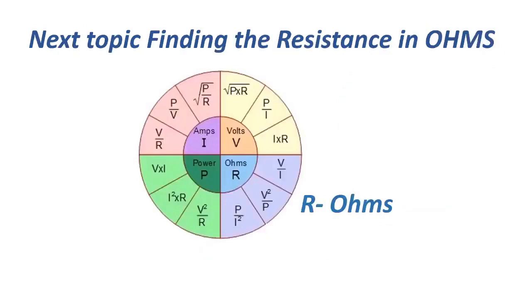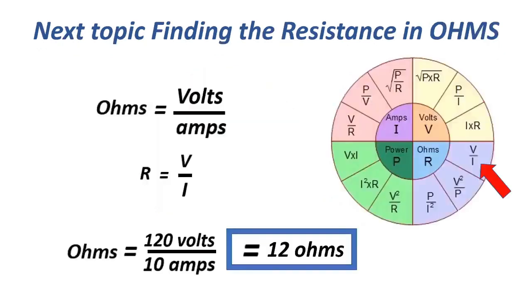The next topic is finding resistance in ohms. Ohms equals volts over amperes, or R equals V over I. That equals 120 volts over 10 amperes, equals 12 ohms.